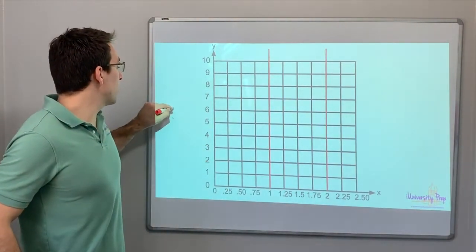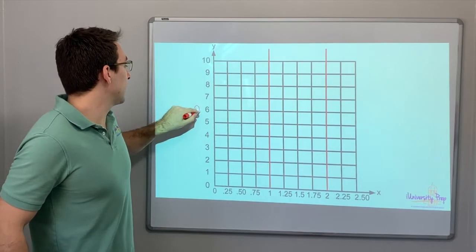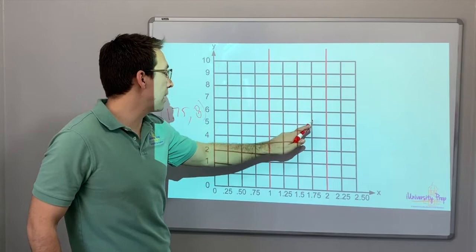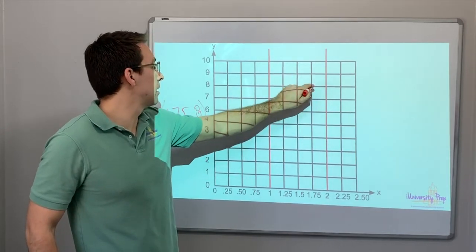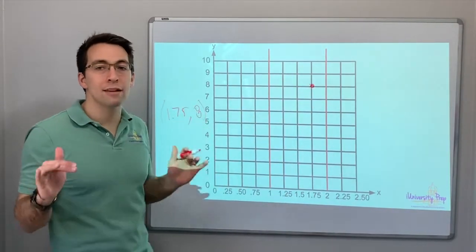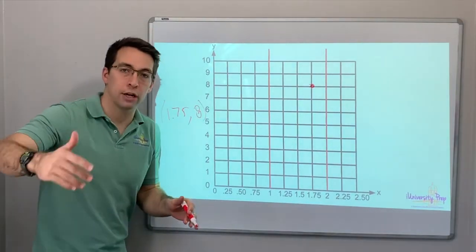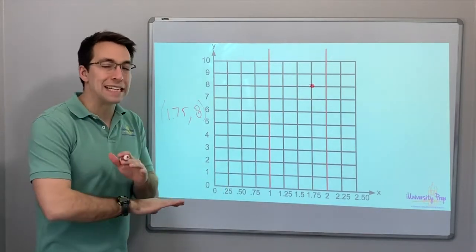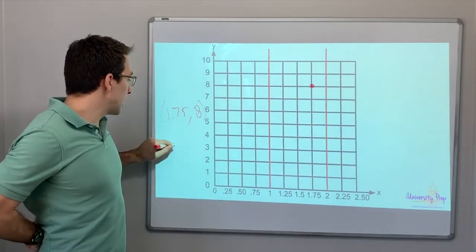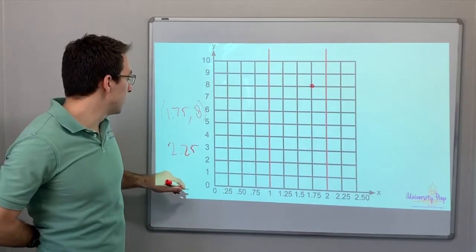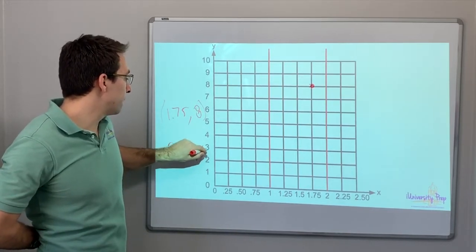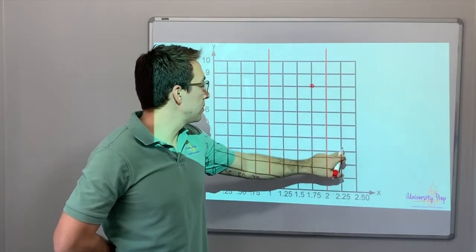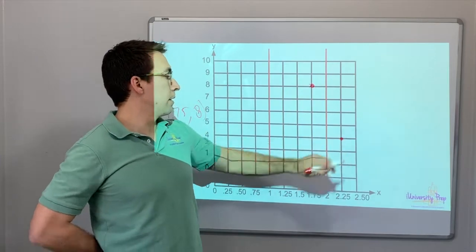So if you have 1.75, and then you get 8. All right. Great. Go to $1.75, and then 1, 2, 3, 4, 5, 6, 7, 8. There's nothing to worry about if you see a fraction or a decimal on the coordinate plane. Treat the x value and the y value exactly the same as you would normally. So we'll say 2.25, and then 4. So we'll go all the way to 2.25, and then 1, 2, 3, 4. There we go. That's it.